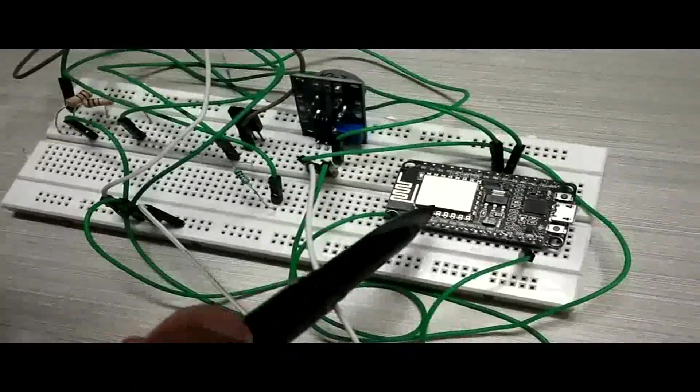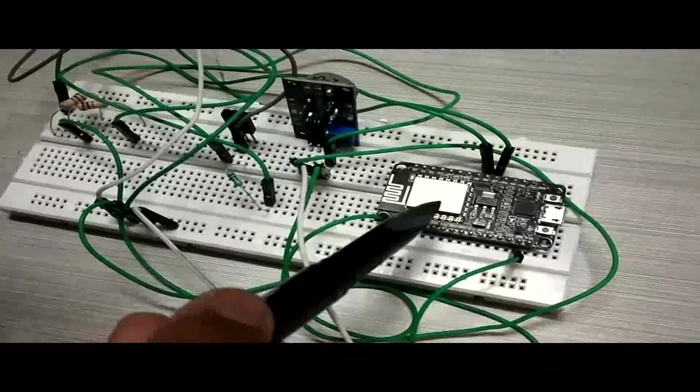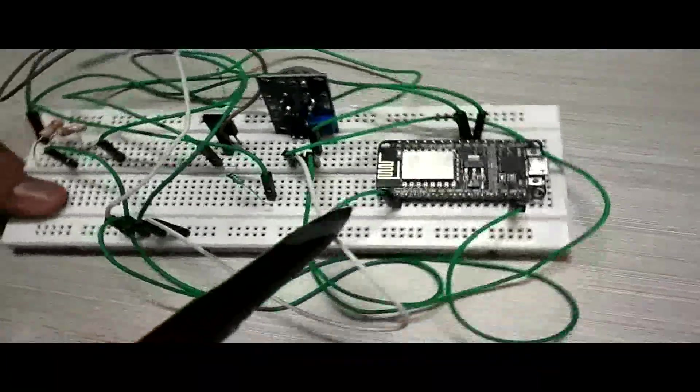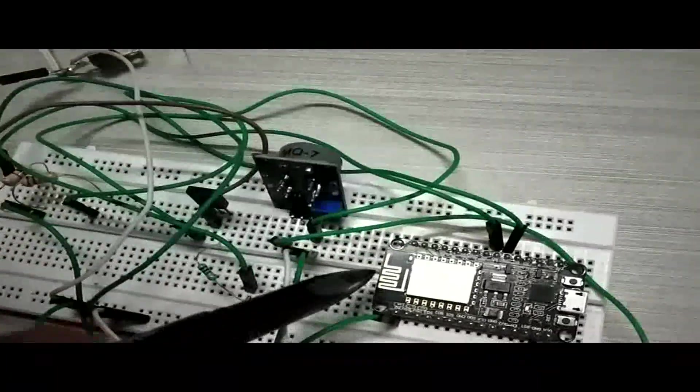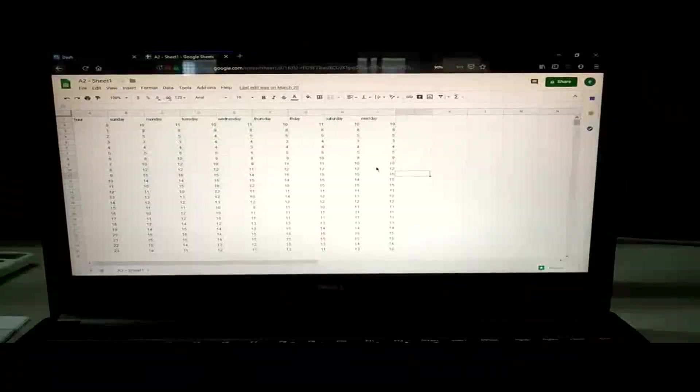And finally, from this point, we have programmed the board to send this A0 to a web server using the Wi-Fi module which is right here. This is the Wi-Fi module. Now, we shall see what happens on the side of the web server and the output on the web server.